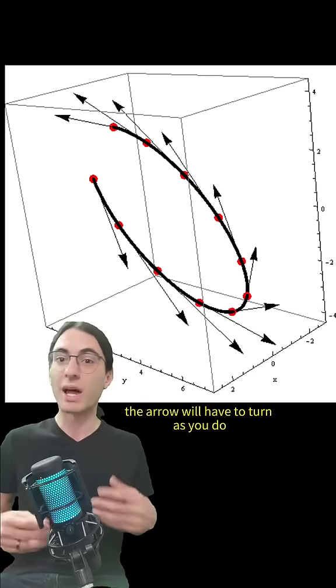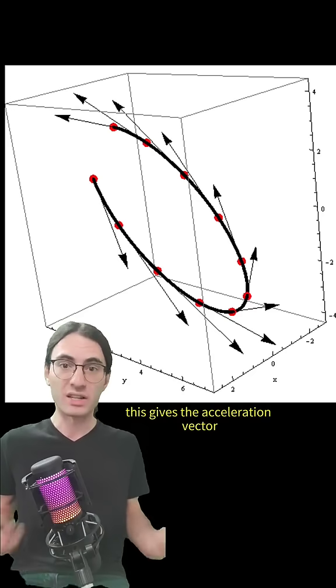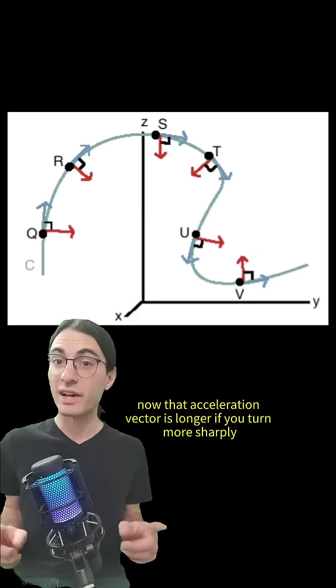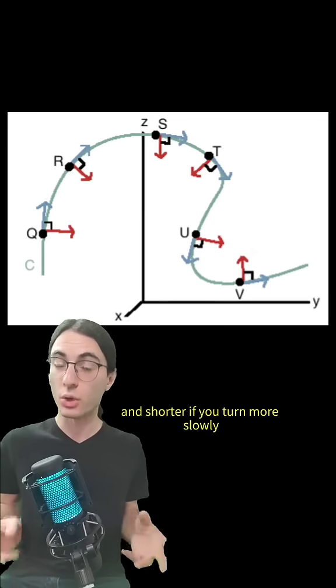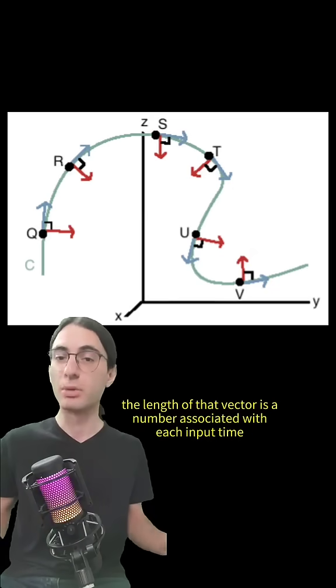Unless the curve is perfectly straight, the arrow will have to turn as you do, and you can calculate the rate at which it curves. This gives the acceleration vector. Now that acceleration vector is longer if you turn more sharply and shorter if you turn more slowly, but the length of that vector is a number associated with each input time.